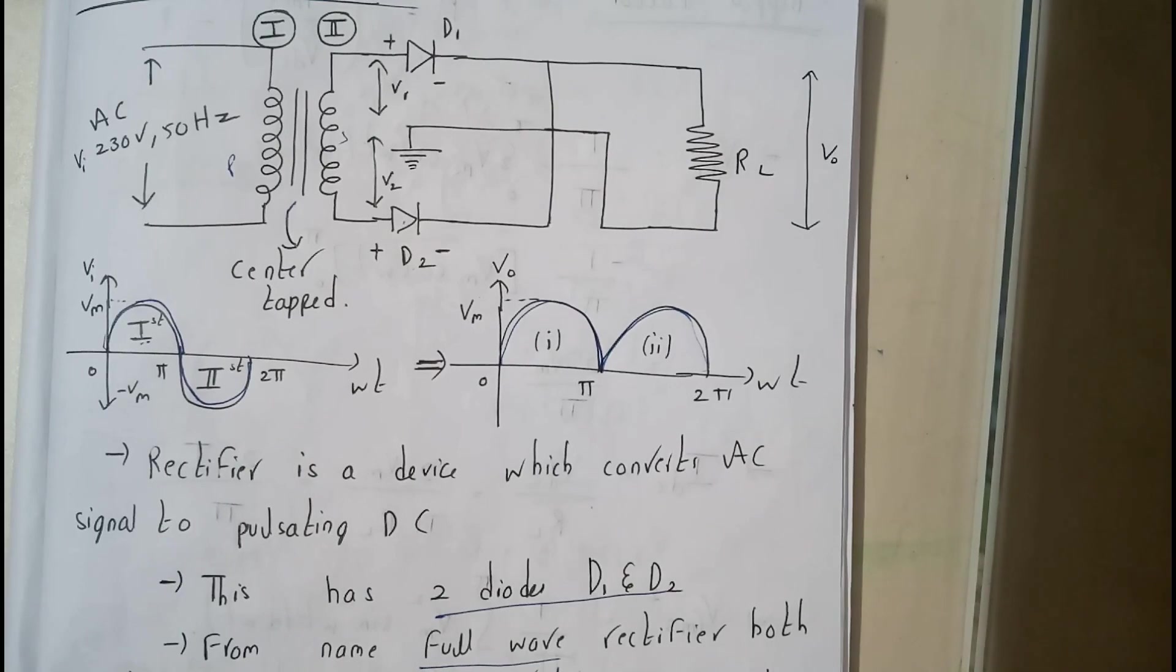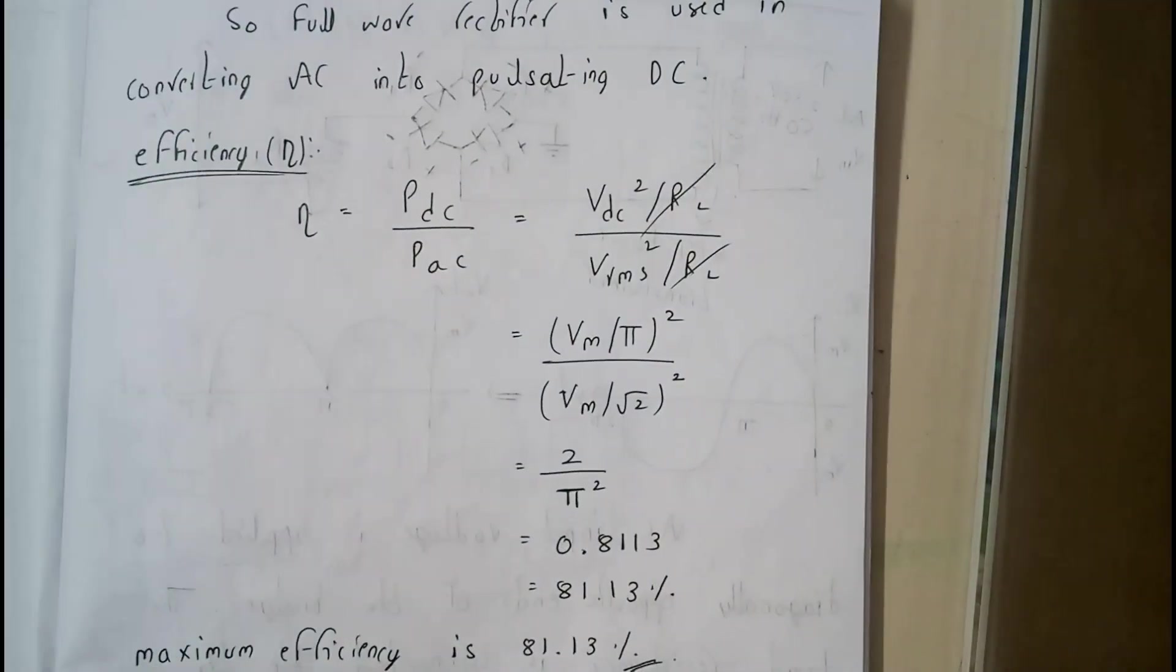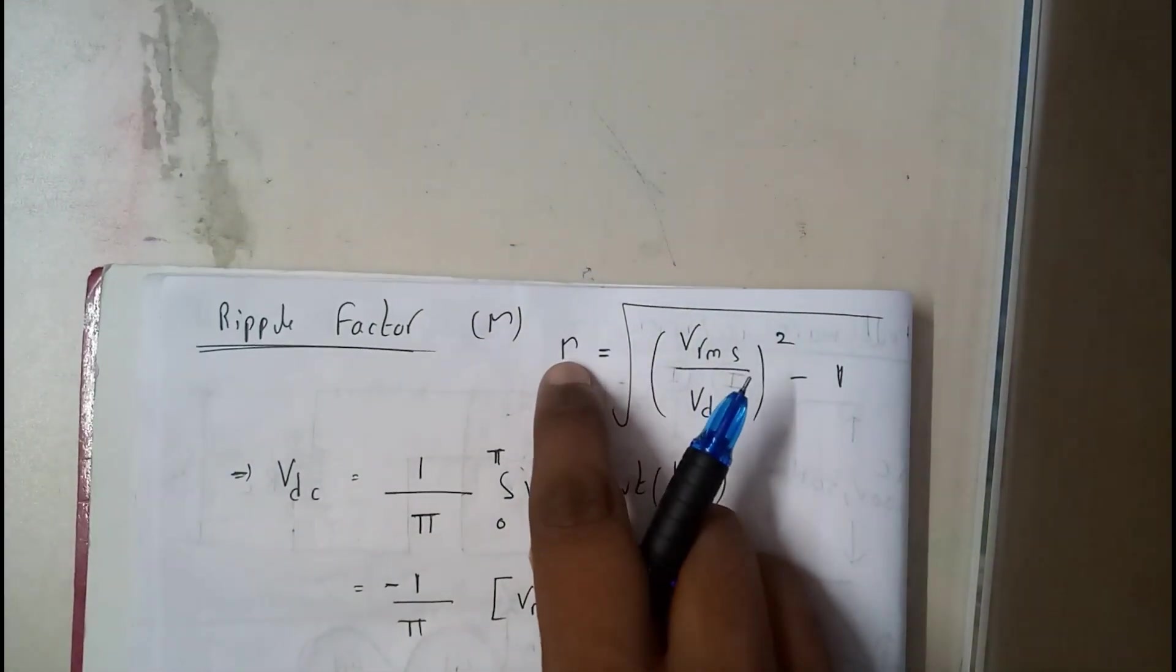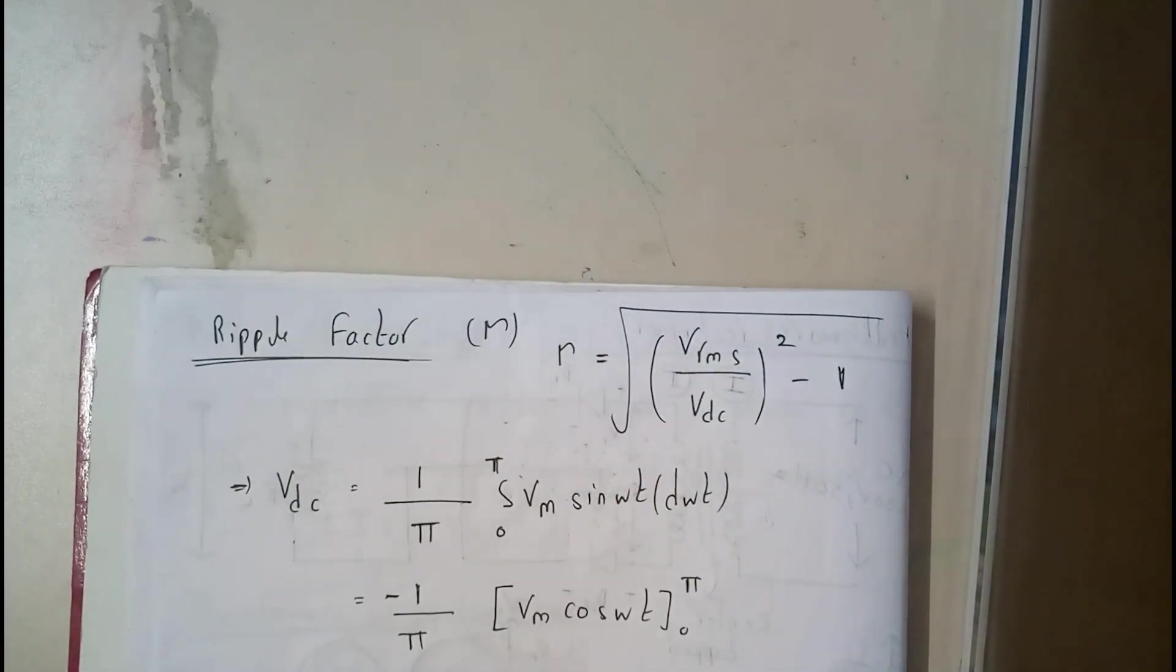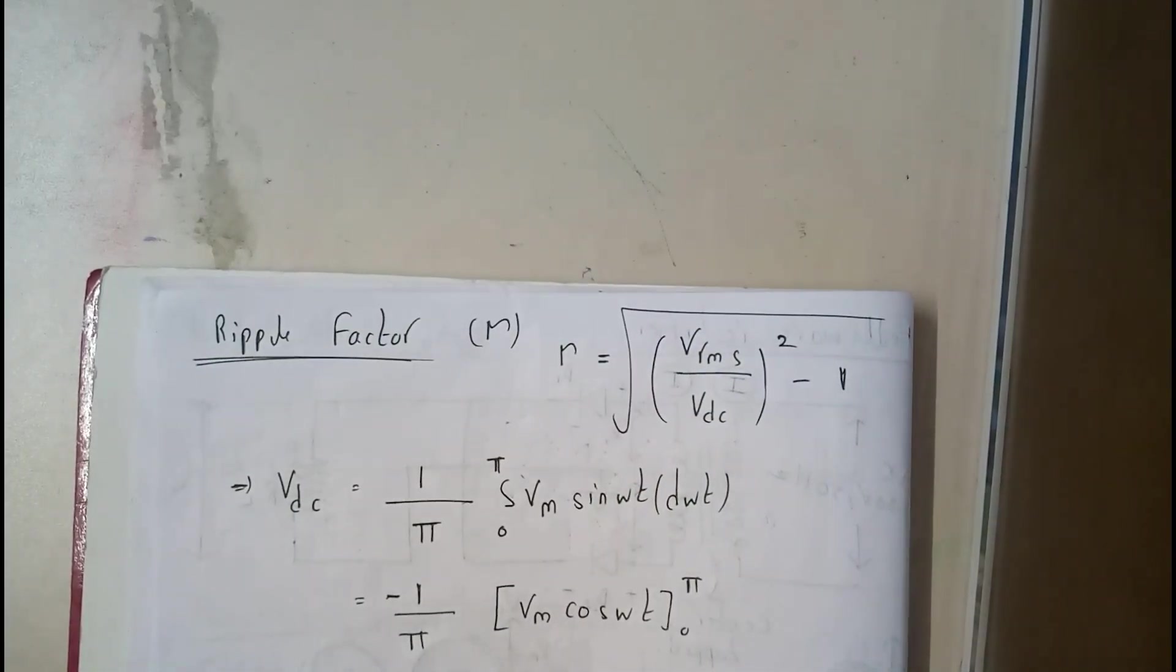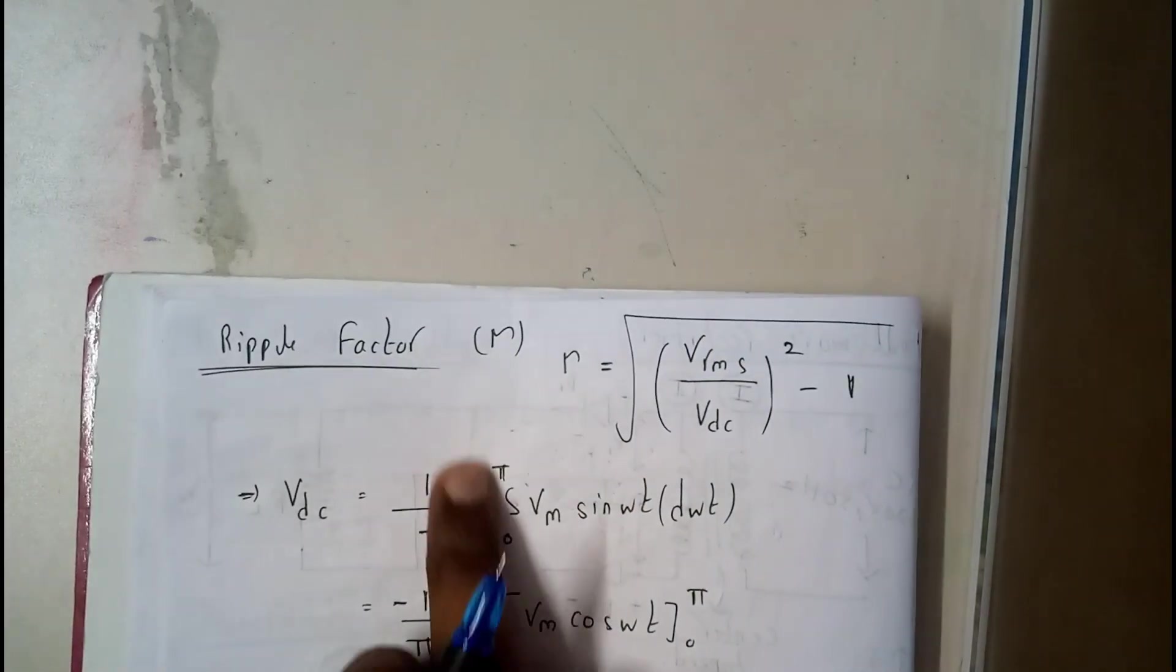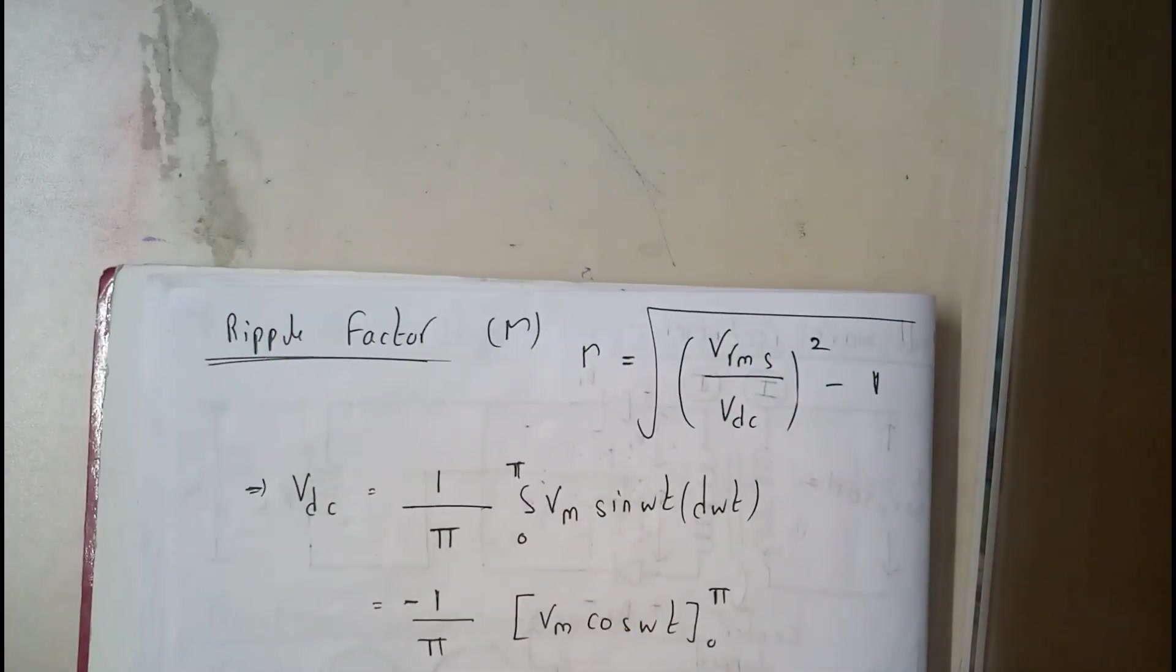Hence we have just done the discussion all about the full-wave rectifier. We are done with it. So now let us go back to some formulas. Basically, we have discussed ripple factor. Ripple factor symbol is γ and equals under root of V_rms by V_dc whole square minus one.